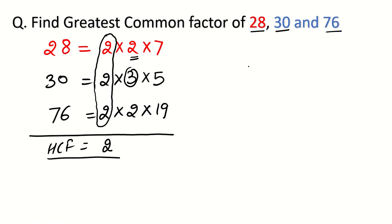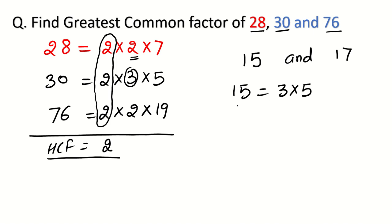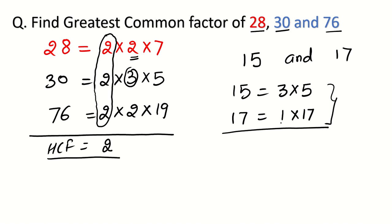After factorization, if you don't find anything common, then HCF will be 1. For example, find HCF of 15 and 17. Write 15 = 3×5, and 17 is a prime number so it can be written as 1×17. Looking up and down, nothing is common. So HCF = 1, because 1 is the factor of all numbers.